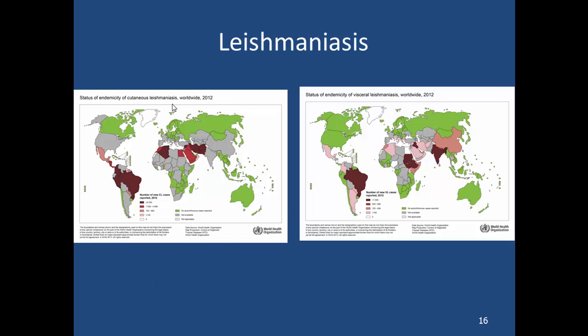The next disease I want to discuss is Leishmaniasis. It's caused by a sandfly, and you can see that the distribution here is fairly worldwide. There are two major kinds of it — the cutaneous form and the visceral form. The cutaneous form causes nodules and boils that tend to come up on the skin. Because of the boils that actually happen, cutaneous Leishmaniasis has developed the term 'Baghdad boil' — a lot of soldiers who went to the Middle East during the first and second Iraqi wars got some of these Leishmaniasis pustules.